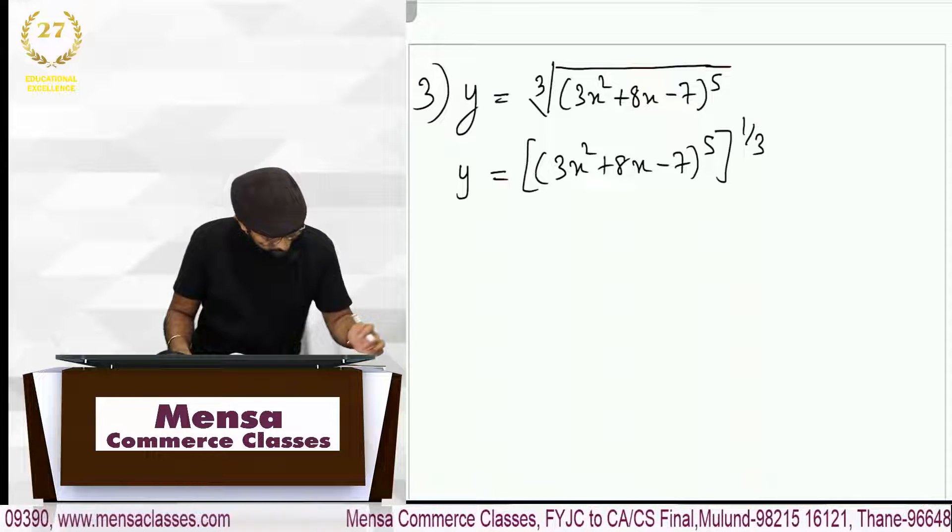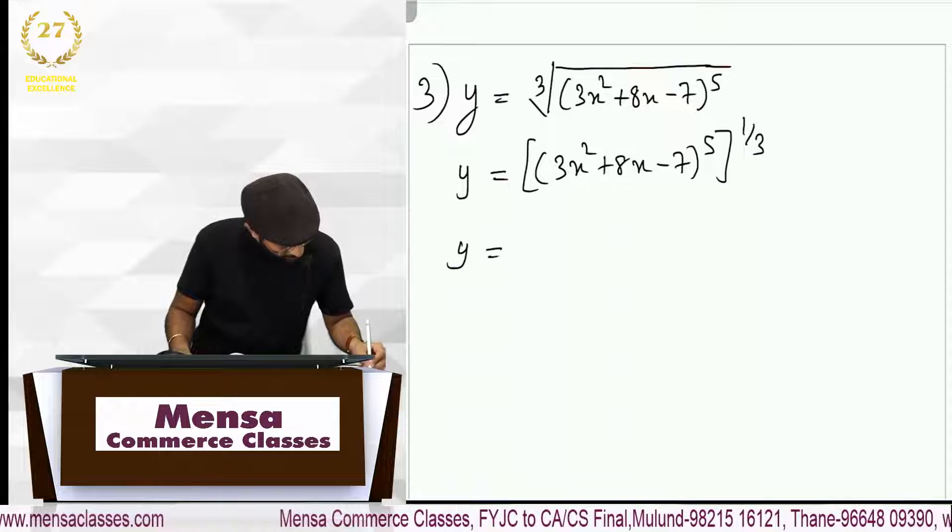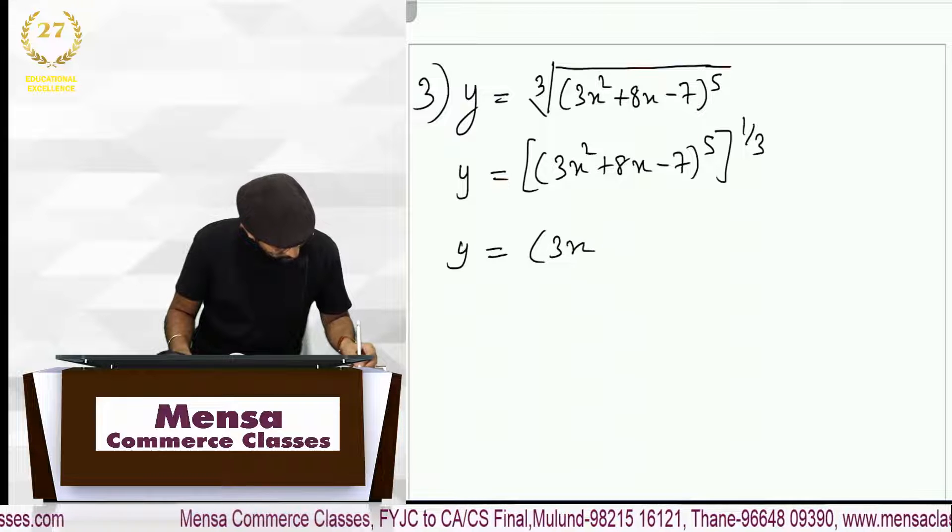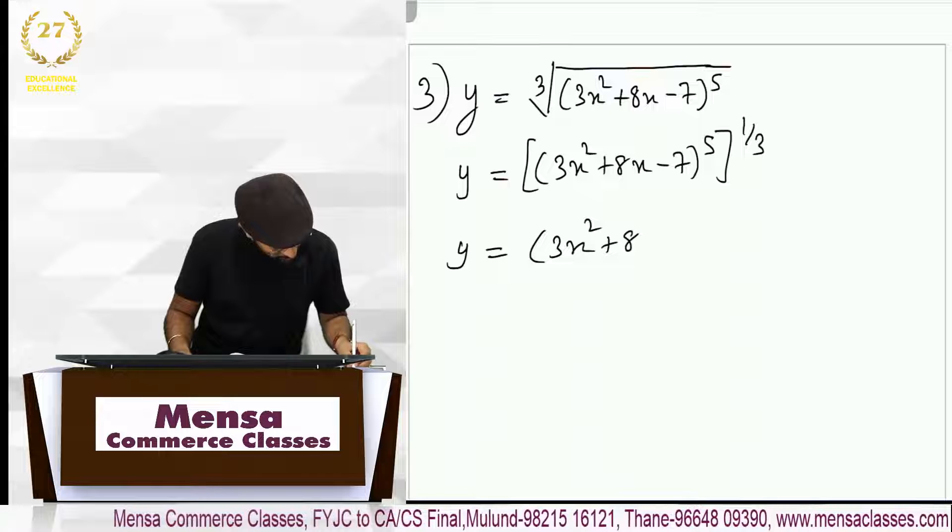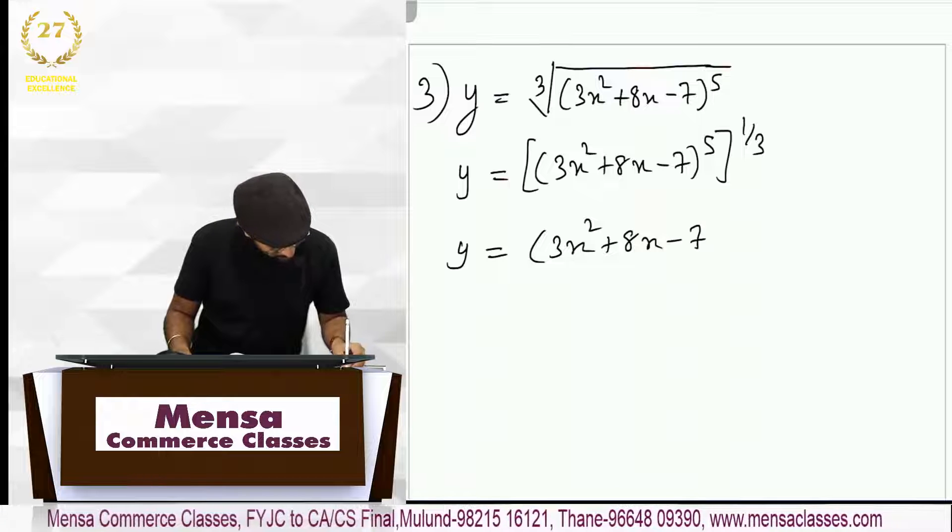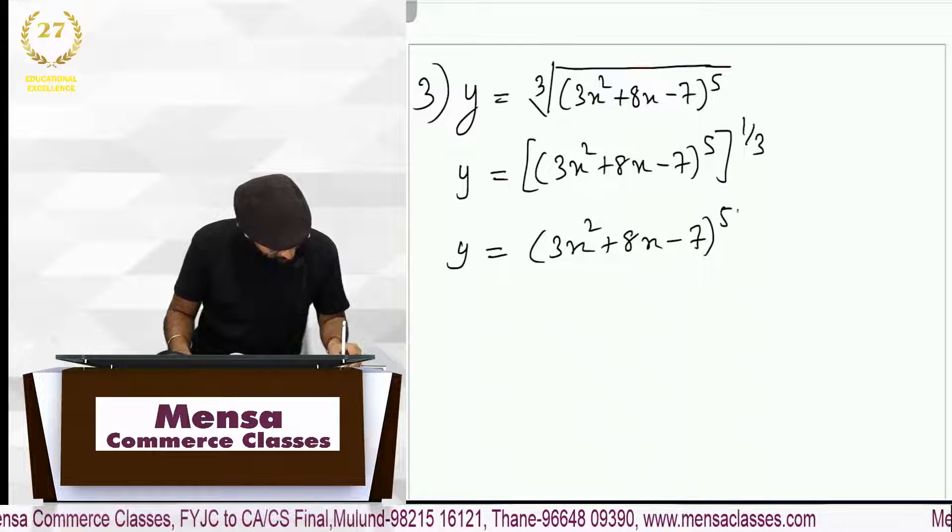So when you do that it will be y equal to 3x square plus 8x minus 7 raised to 5 by 3.